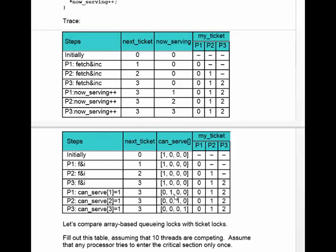When the next process gets in, the one moves to the first position. Process two gets in, it goes to the second position. Process three gets in, it goes to the third position. So the canServe array has the value of one percolating from left to right, allowing one process after another to enter the critical section. The values of my-ticket are always the same: the first process to get a ticket gets zero, the second gets one, and the third gets two.